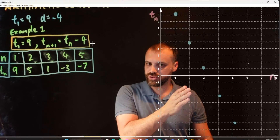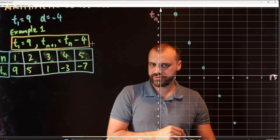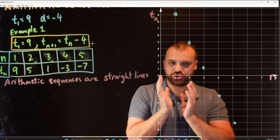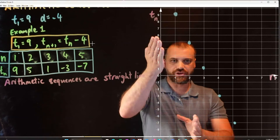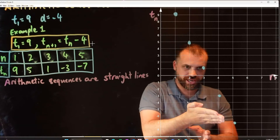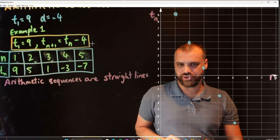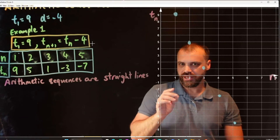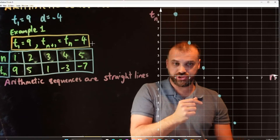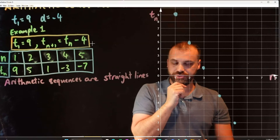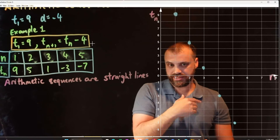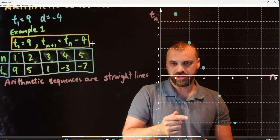Something I really want you to note here: arithmetic sequences are always straight lines. We can draw a straight line through those points. If you've graphed it and you can't draw a straight line through those points, then you've made a mistake — something has gone wrong.